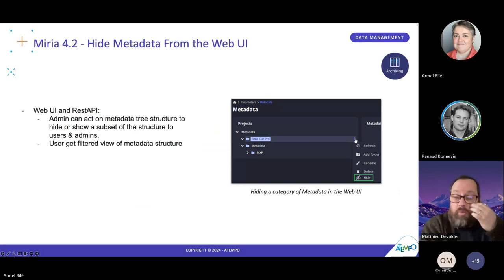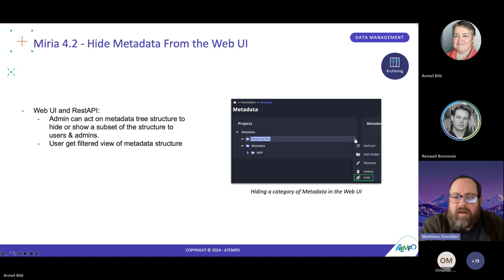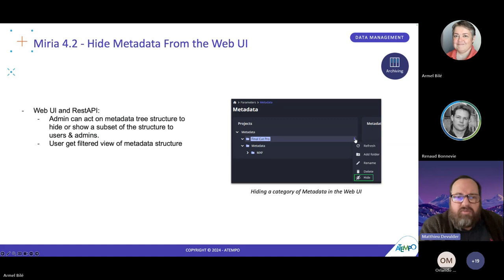We now have the ability to hide metadata from the web UI. By default, there are some interesting metadata types like Finite Grid Pro, MXF, and so on, mainly aimed at the media and entertainment verticals. If you are using Miria outside of this industry, you can create and set specific metadata on your own, but you can now also act on the default metadata and hide a subset or all of them if needed, giving you a filtered view of the metadata structure that is easier to use and maintain.